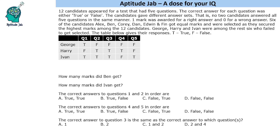Hello everyone, welcome to Aptitude Jab. This set says that there are 12 candidates who appeared for a test that had 5 questions. The correct answer for each question was either true or false. The candidates gave different answer sets — no two candidates answered all five questions in the same manner. One mark was awarded for a right answer and zero for a wrong answer. Six of the candidates A to F got equal marks and were selected as they secured the highest marks among the 12 candidates. George, Harry, and Ivan were among the rest six who failed to get selected. The table below gives their responses, where T means true and F means false.